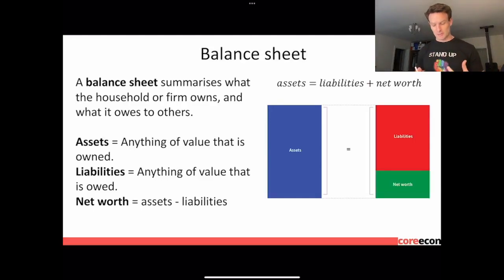Hi everyone, I just want to talk a little bit about balance sheets. A balance sheet summarizes what the household or firm owns and what it owes to other people. Assets are anything of value that is owned, liabilities are anything of value that is owed to someone else, so debts you have towards other people, and then your net worth is your assets minus your liabilities.